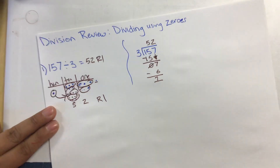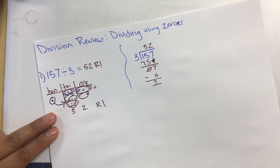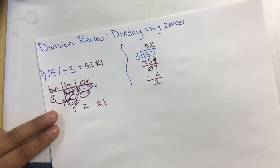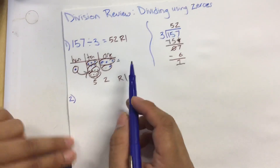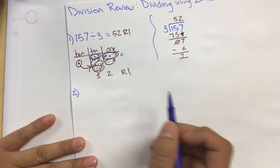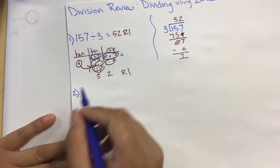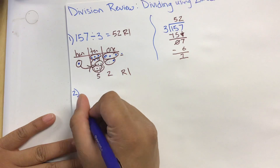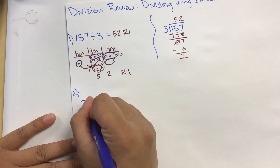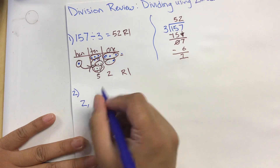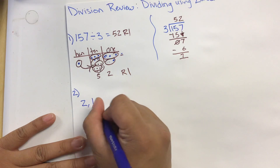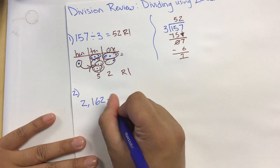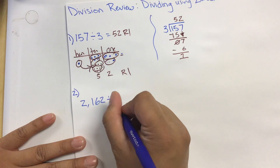Now what happens if you have a zero in the middle of the problem? Let's look at the number 2162 divided by three.